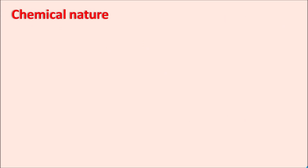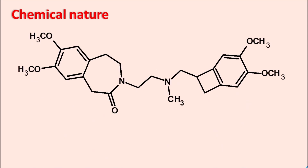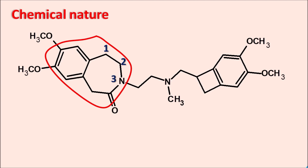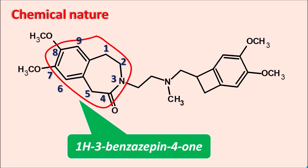Now let us see the chemical nature of this drug. In the structure of Ivabradine, we can observe a heterocyclic ring system — a seven-membered ring system with one nitrogen fused with benzene, which is nothing but benzazepine. Nitrogen is present at the third position and a ketone group is present at the fourth position. So this ring is nothing but 1H-3-benzazepin-4-one. Ivabradine is a benzazepine derivative.